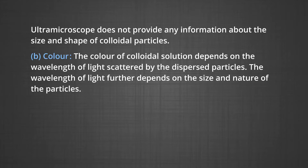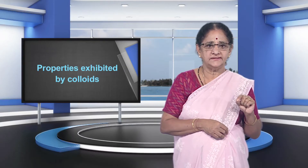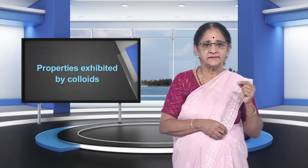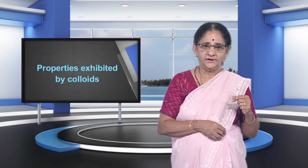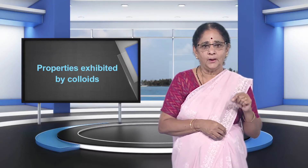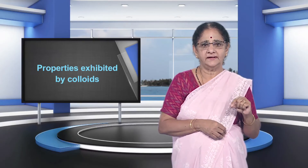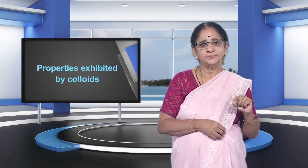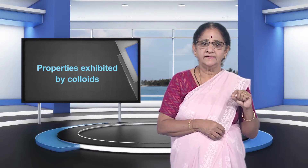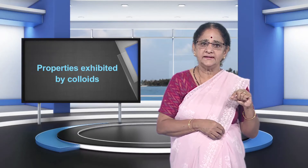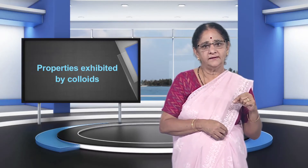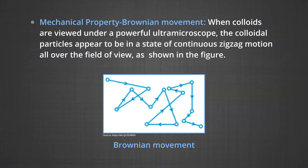Color. The color of colloidal solution depends upon the wavelength of the light scattered by the dispersed particles. The wavelength of the light further depends upon the size and nature of the particles. The color of colloidal solution also changes with the manner in which the observer receives the light. For example, a mixture of milk and water appears blue when viewed by the reflected light and red when viewed through the transmitted light. Finest gold sol is red in color. As the size of the particle increases, it appears purple, then blue, and finally golden.